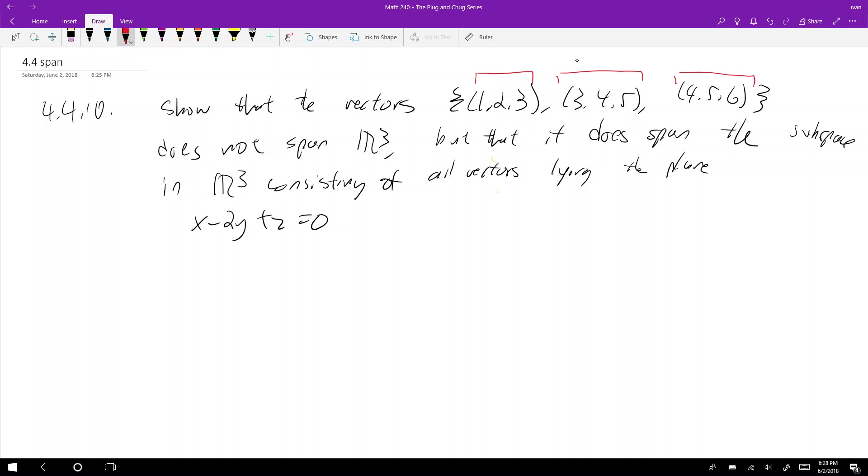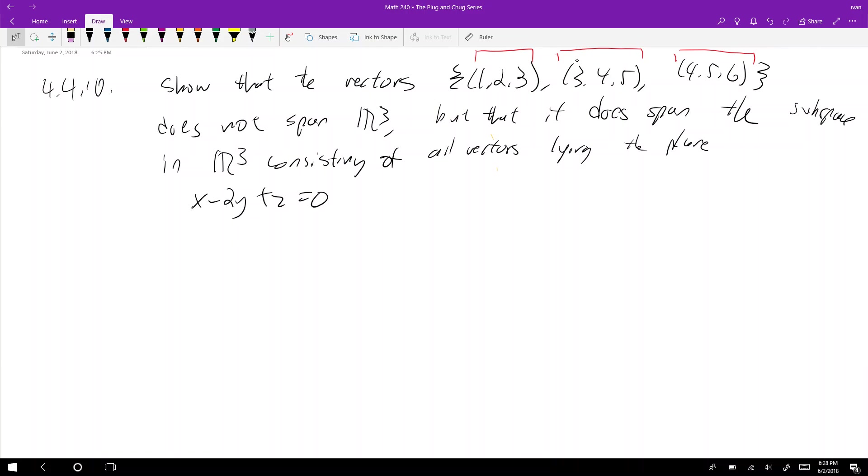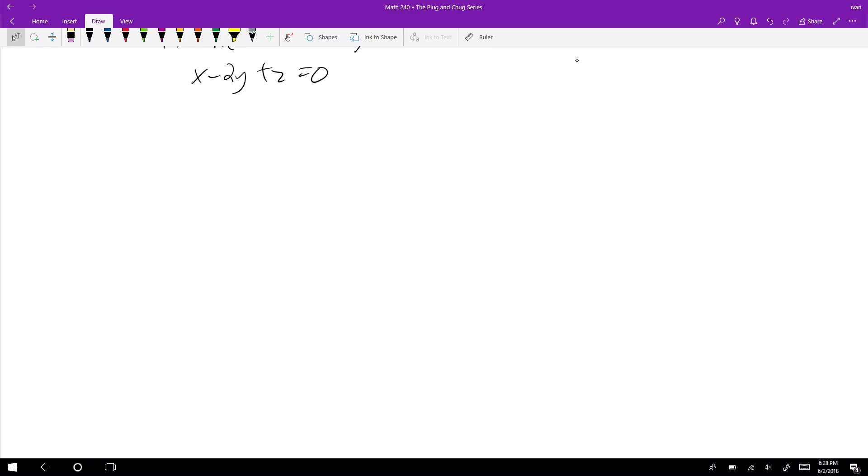The point of this problem is to show that these three vectors don't span R3. What spanning means is that some linear combination of these three vectors can hit every single vector in R3. They don't, so they do not span R3. To show that a set of vectors spans something, we throw these vectors into a matrix.